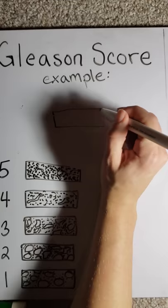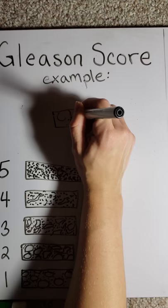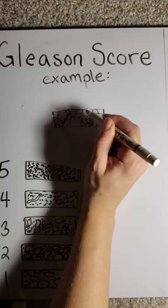Sometimes the most predominant cancer cell type is the same. This is the case with Gleason 3 plus 3, 4 plus 4, and 5 plus 5.